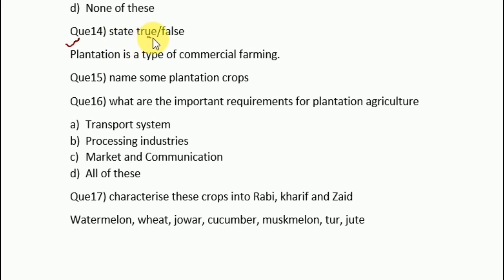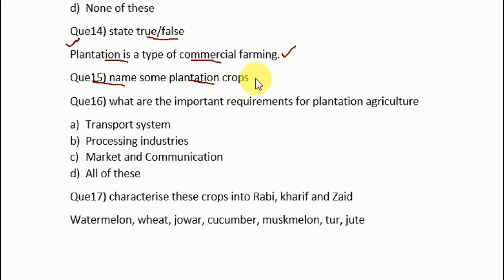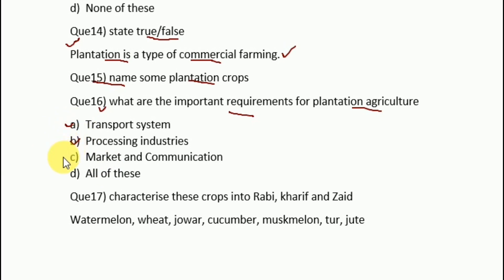Question 14: true or false — plantation is a type of commercial farming. Yes, the statement is correct; plantation is indeed a type of commercial farming. Question 15: name some plantation crops. You can mention any — tea, coffee, or rubber; any two of these is sufficient. Question 16: what are the important requirements for plantation agriculture? Transport is necessary, processing industry is obviously very necessary, and market and communication as well. So the answer is D — all of these.